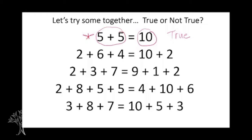You looked and saw 5 plus 5 — easy fact — is the same as 10. Nice! Let's go on to this problem: 2 plus 6 plus 4, is the same as 4 plus 10. Is that true or not true? Did you say true? I zeroed in on the 10 on the right side, and I see a 10 on the left side — those two 10s cancel each other out, so they're balanced. Then my 2 and my 2 are also the same, so this equation is true.